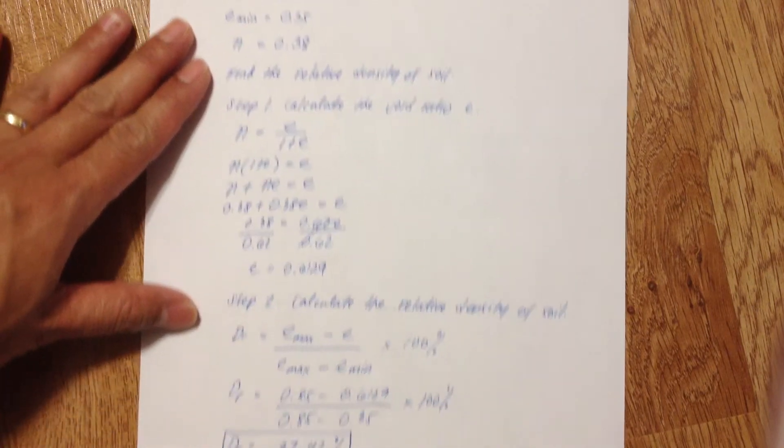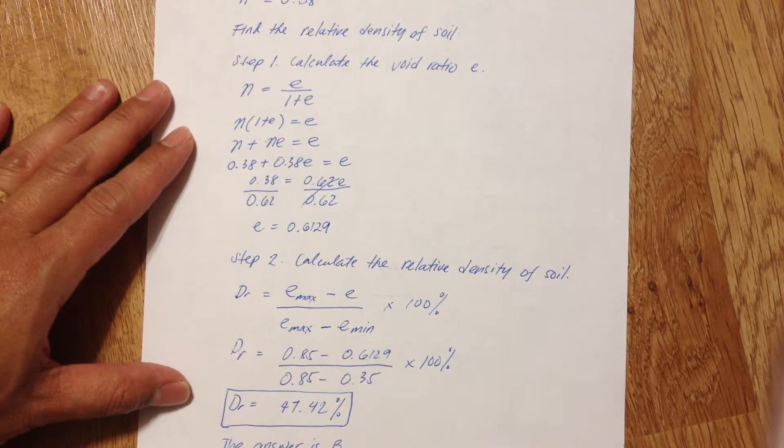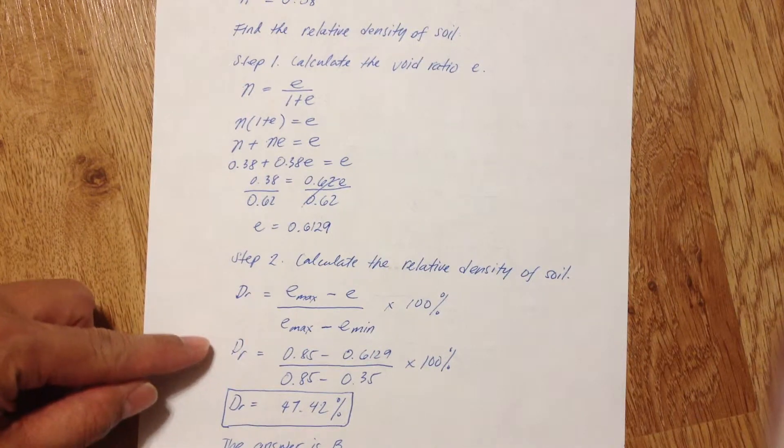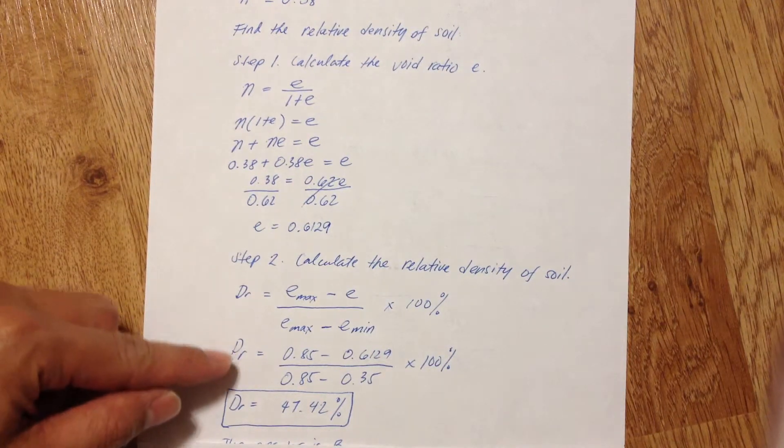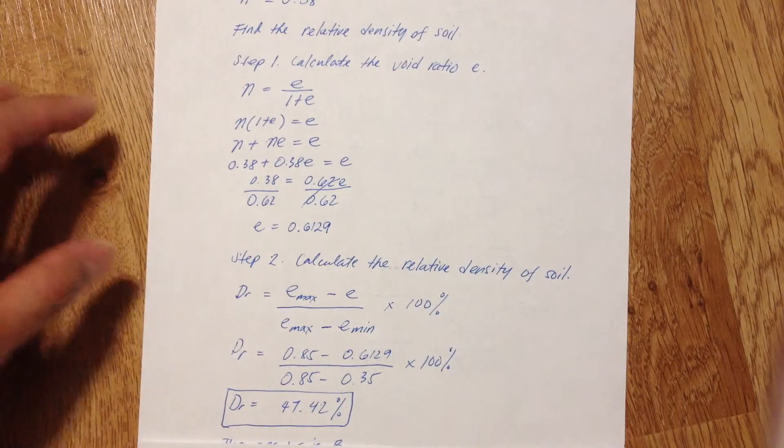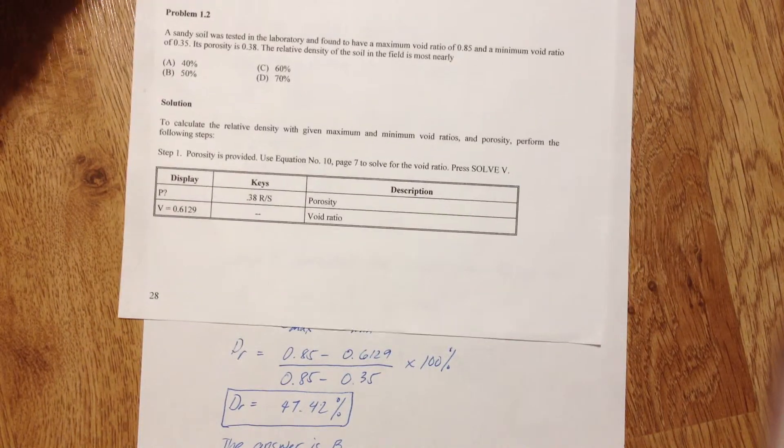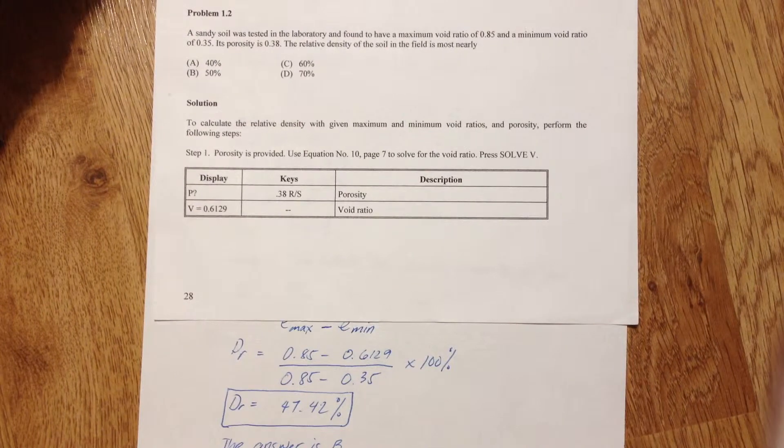Then we can now use this equation to calculate the relative density. So we have a relative density of 47.42 percent and the answer is B which is 50 percent and that's the closest one.